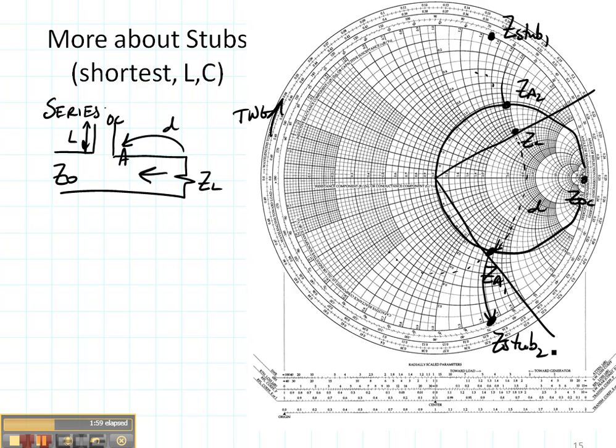These are supposed to be conjugates and if I'd measured my distances a little more carefully they would have been. So Z1 and Z2 are both possible stubs for an open circuited load.